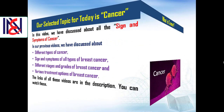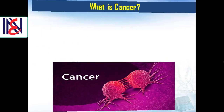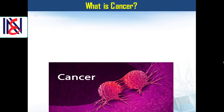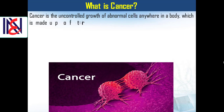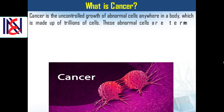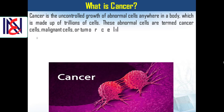What is cancer? Cancer is the uncontrolled growth of abnormal cells anywhere in a body, which is made up of trillions of cells. These abnormal cells are termed cancer cells, malignant cells, or tumor cells.